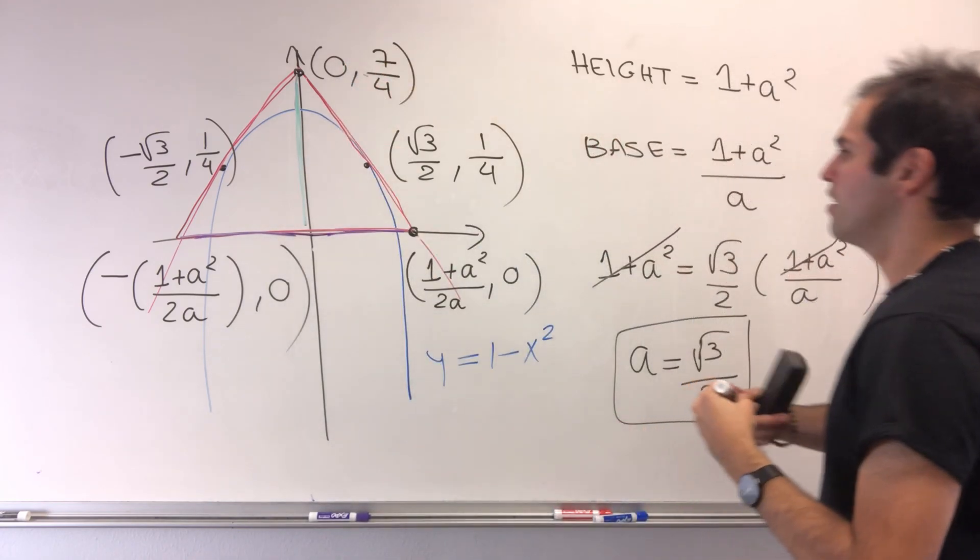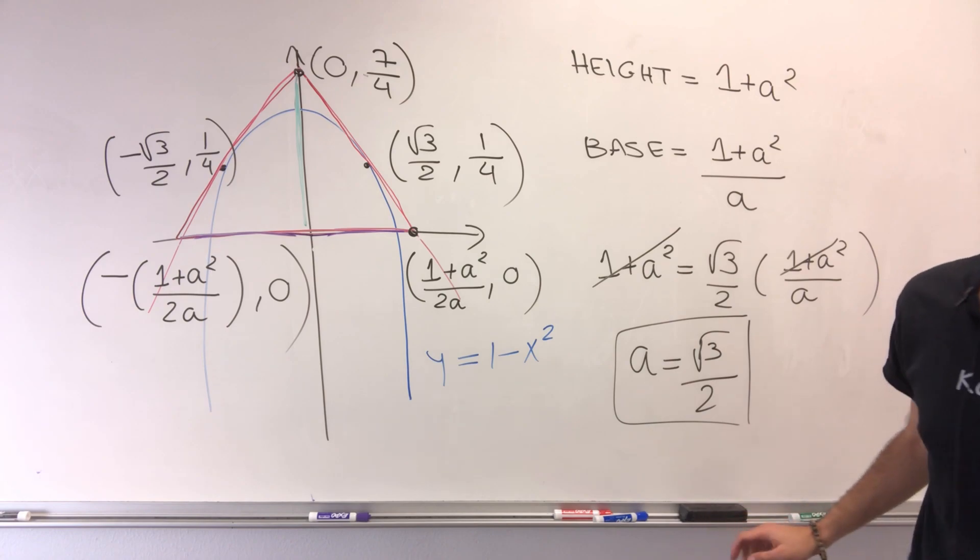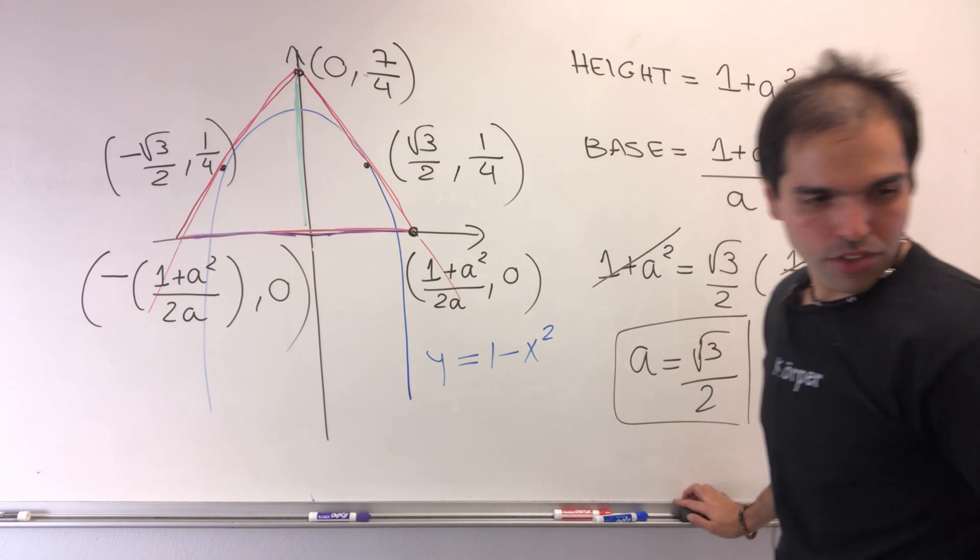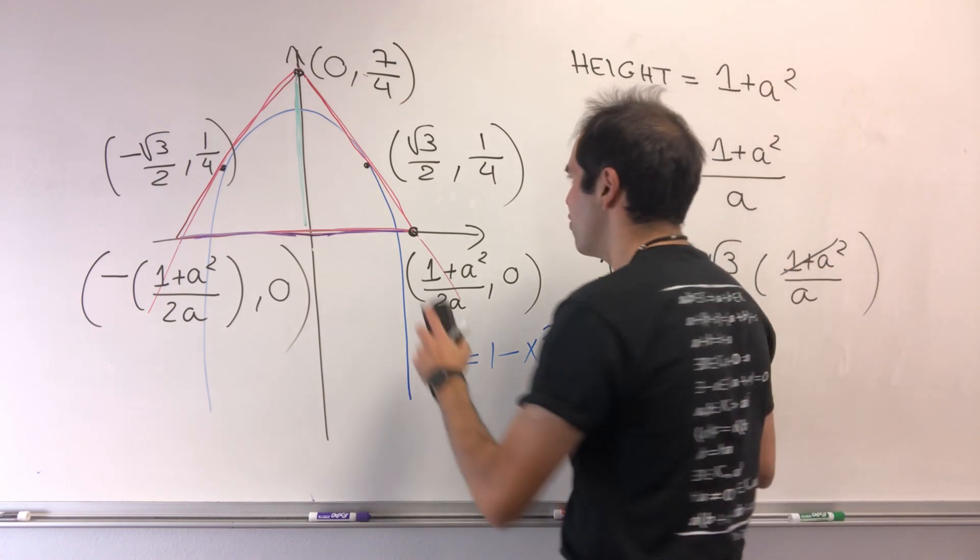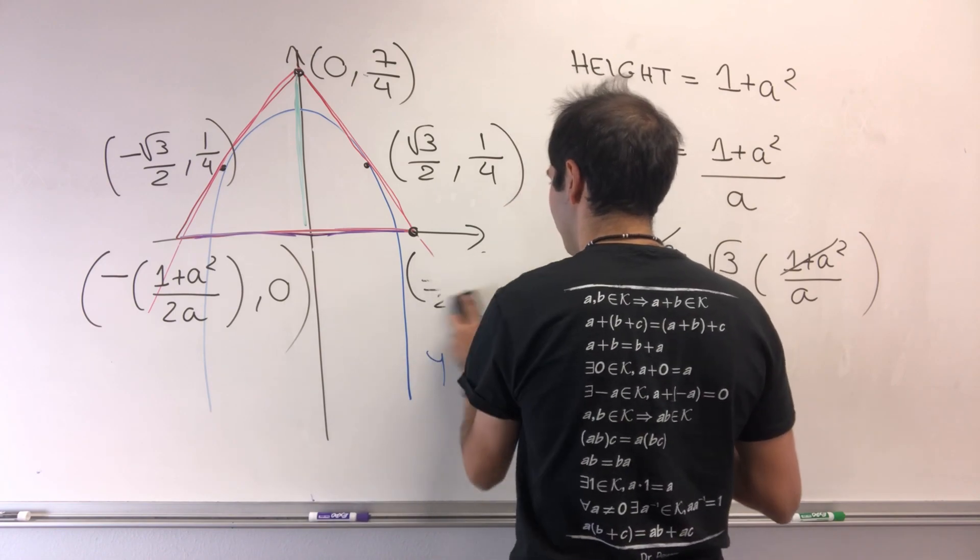And then finally, so 1 plus a squared over 2a, I think you can just calculate this to be 7 over 4 square root of 3, something like that.